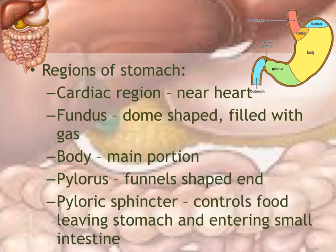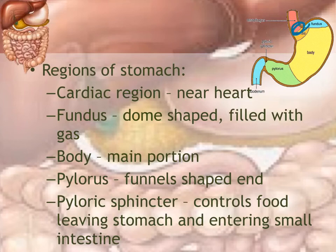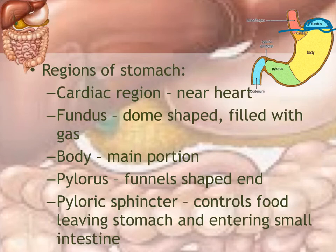The regions of the stomach include the cardiac region, which is the portion nearest to the heart. When acid reflux occurs, the stomach acid burns the esophagus in that area near the heart, which is why some people think it's burning the heart — but technically it is burning the lining of the esophagus. The fundus is the dome-shaped area at the top; when gastric juices are present, the fundus is filled with gas, because gravity keeps the acid below that level. Sometimes this gas is released in the form of a burp.